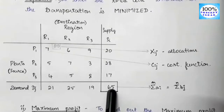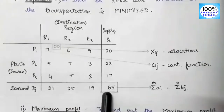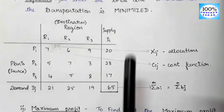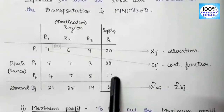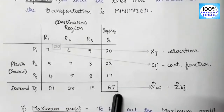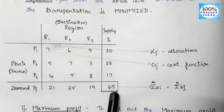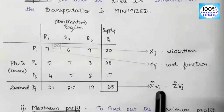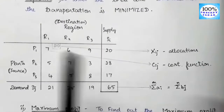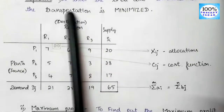The total of demand and supply is 65: 21 + 25 + 19 = 65, and 20 + 28 + 17 = 65. Demand and supply must always be equal so that the supplied units can satisfy customer demand. Therefore, the summation of ai (supply) must equal the summation of bj (demand).